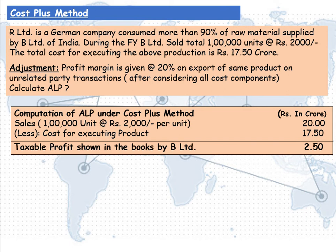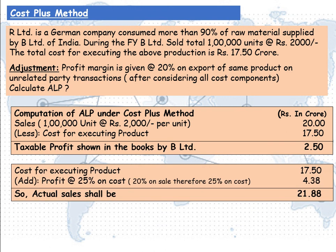Total sales is Rs 20 crores, that is 1 lakh units at the rate of Rs 2,000 per unit. Less cost for executing the product, which is Rs 17,50,00,000. Therefore, taxable profit shown in the books by B Limited is Rs 2,50,00,000. We compare this with the unrelated enterprise transaction. Cost of production is Rs 17,50,00,000. The profit margin is 20% on sales, which converts to 25% on cost. So 25% on Rs 17,50,00,000 equals Rs 4,38,00,000. Therefore, actual sales shall be Rs 21,88,00,000.